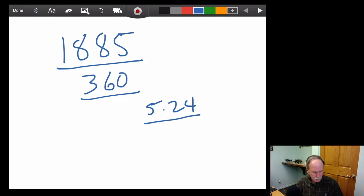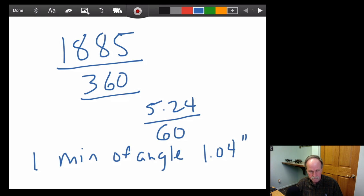Now we divide that by 360 and that gives us 5.24 feet. That gives us the number of feet in one degree of that 360 degree circle. Now if we divide that by 60 and multiply by 12, we find that one minute of angle is 1.04 inches. Alright, so that's how we calculate what a minute of angle is.